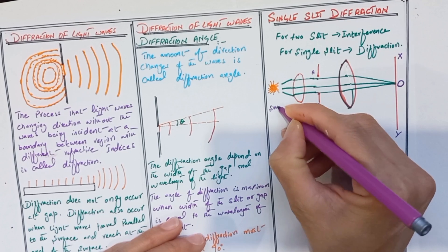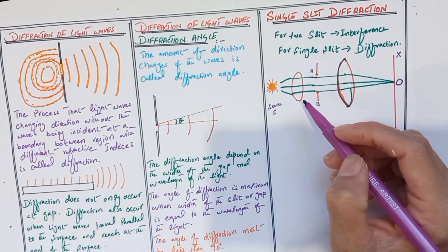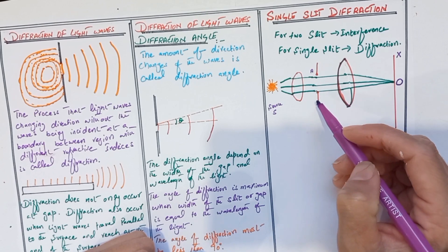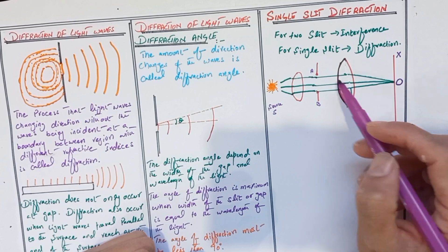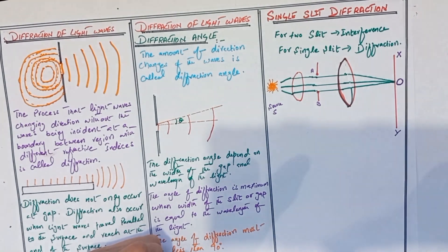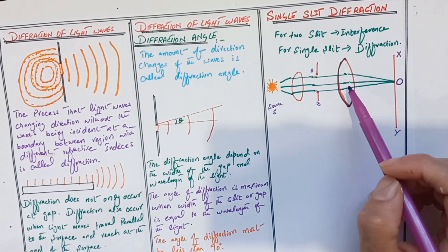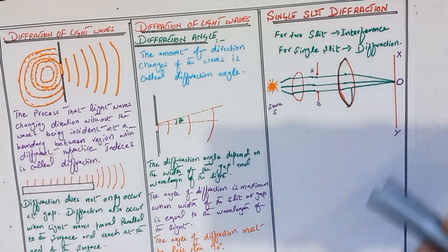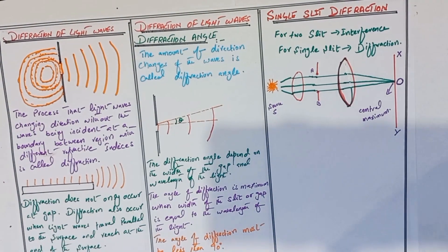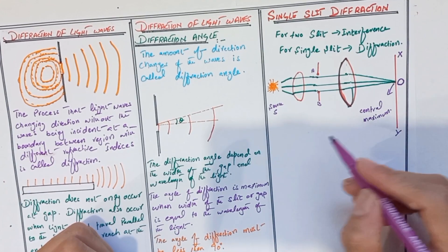We take a single source that produces monochromatic light by placing a lens. When light passes through this lens it becomes parallel. This parallel light passes through the narrow slit, and when it passes through the converging lens it is focused to the centre point O on the screen. When light passes through the slit it becomes diffracted, and these diffracted rays are focused by the converging lens onto point O.